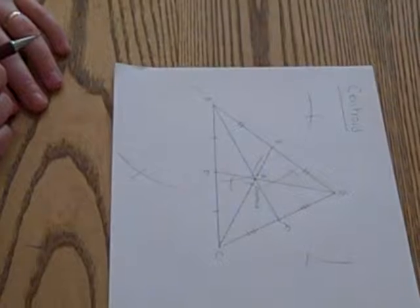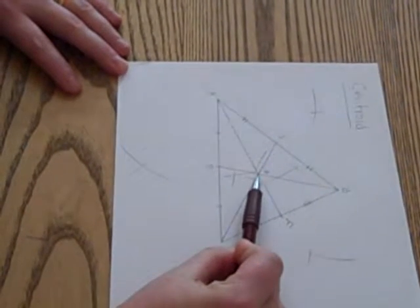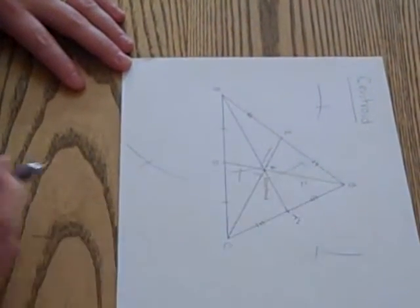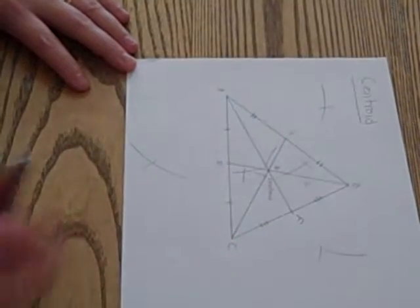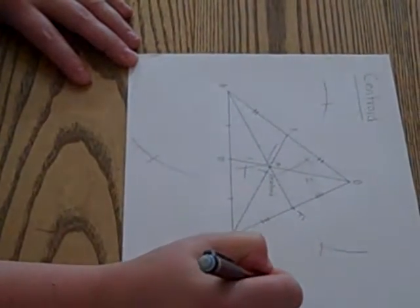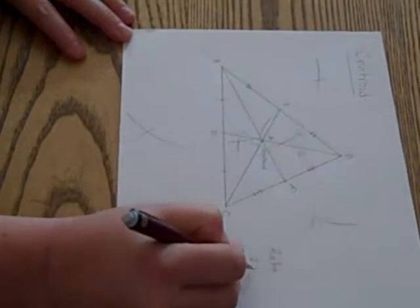Now, the centroid gives us something special. The distance from point B to Z is two times the distance from point Z to D. So the centroid gives me a ratio of two to one.